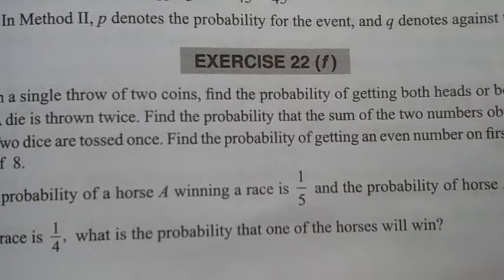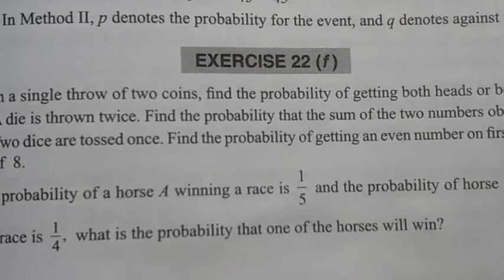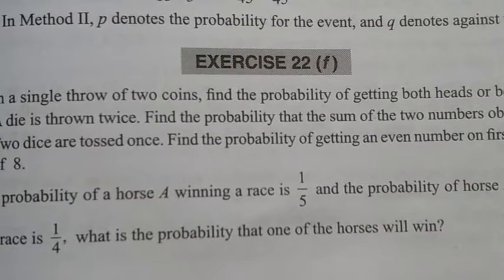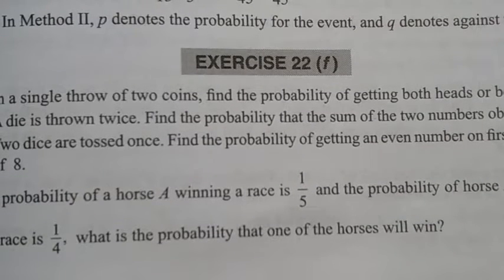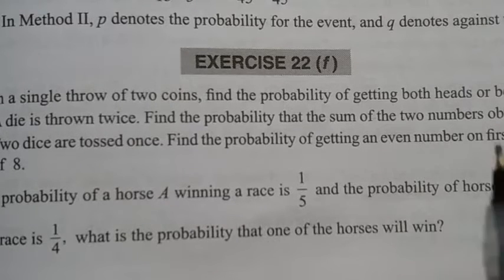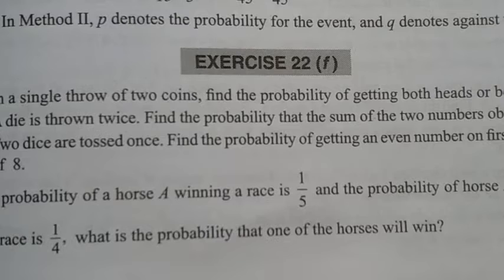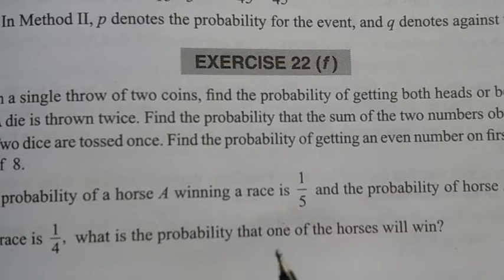In a race, only one horse can win. It is not possible for both to win simultaneously. So if the first one wins, the second one cannot win, and vice versa. These two events are called mutually exclusive events.